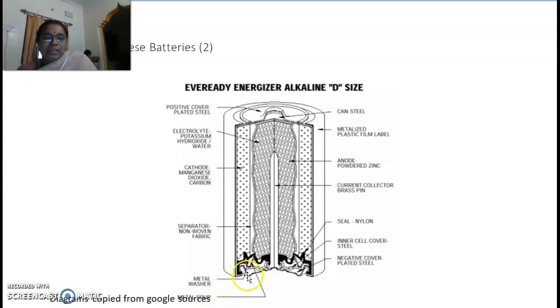This is the metal cover, this is separator. This is anode, this is cathode. Anode and cathode are metals dipped in electrolyte. Unless electrolyte is there, it cannot work as a battery. The electrolyte is KOH in water, and all this is sealed.